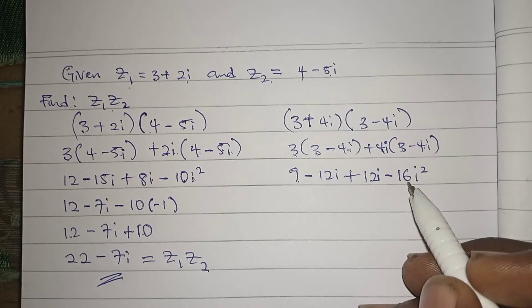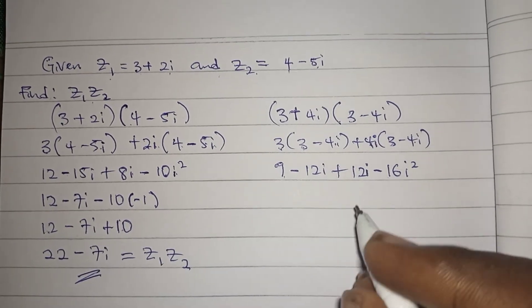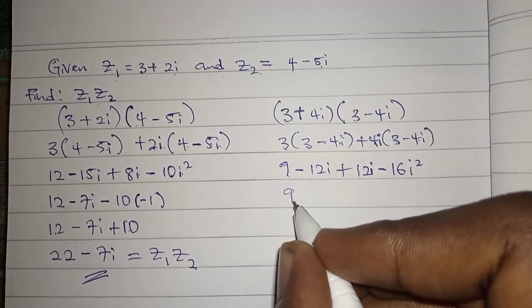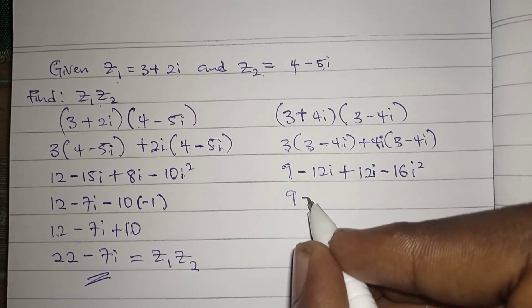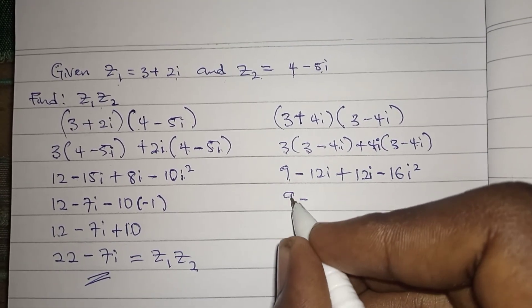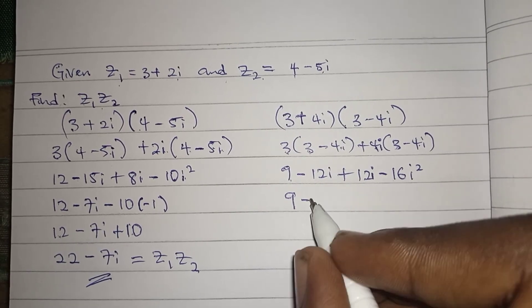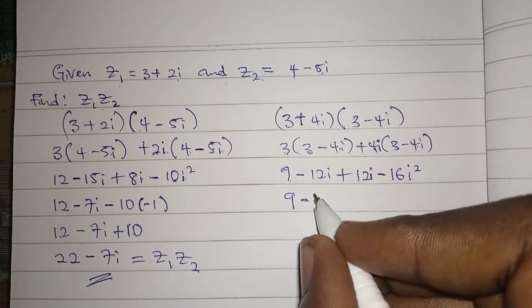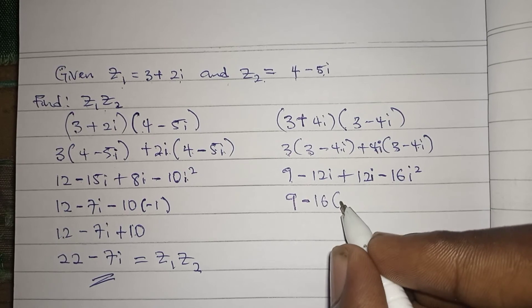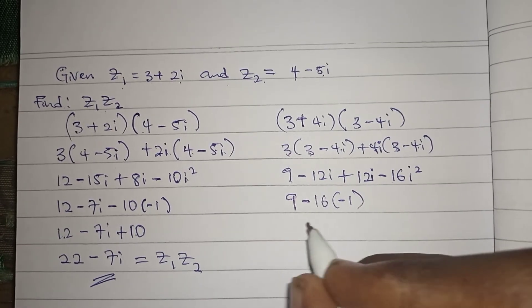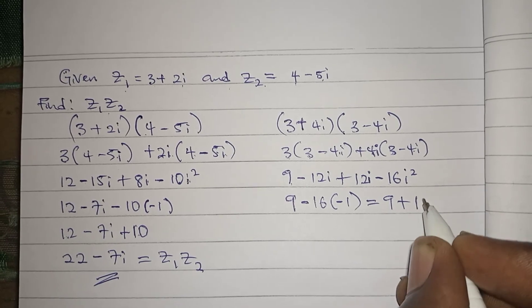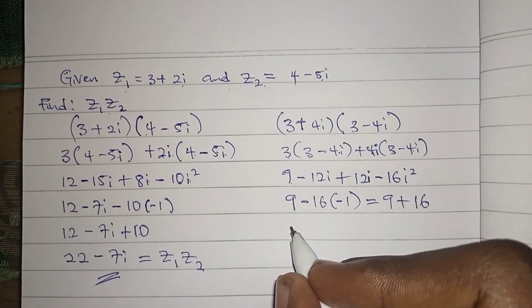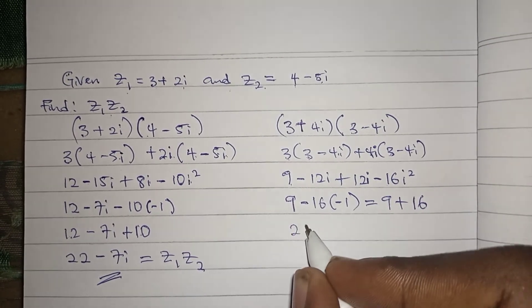So solving we have 9, and this middle part gives us 0 so we can leave it aside, then minus 16i squared. Remember i squared is minus 1, so it gives us 9 plus 16. Our answer now becomes 25.